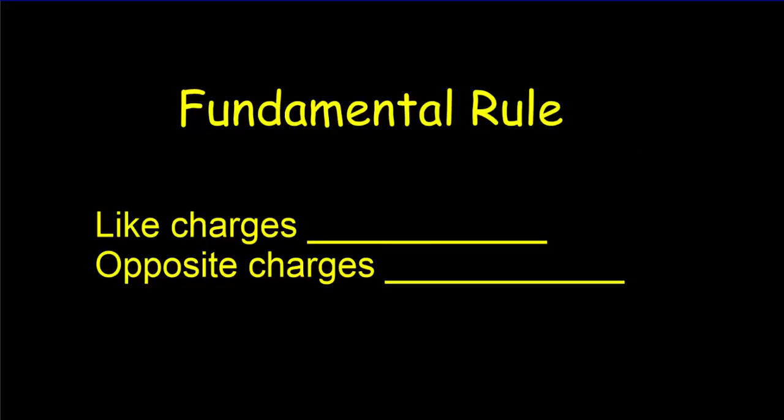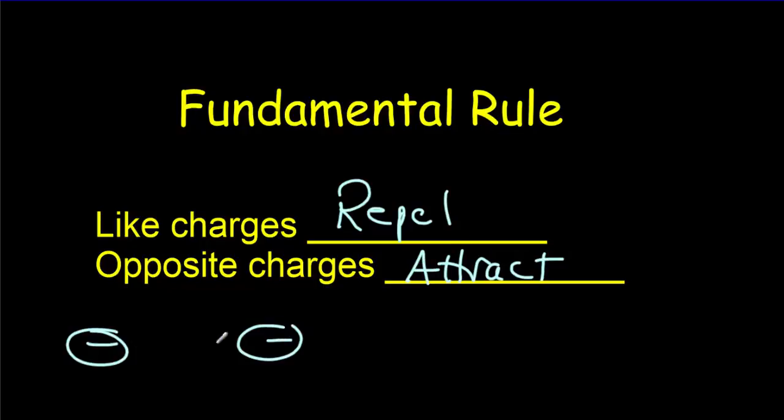We have a fundamental rule of electrostatics, and that is that like charges will repel, whereas opposite charges attract. So if you've got two electrons, they're going to push each other away. But if we've got a proton and electron, they're going to attract each other.